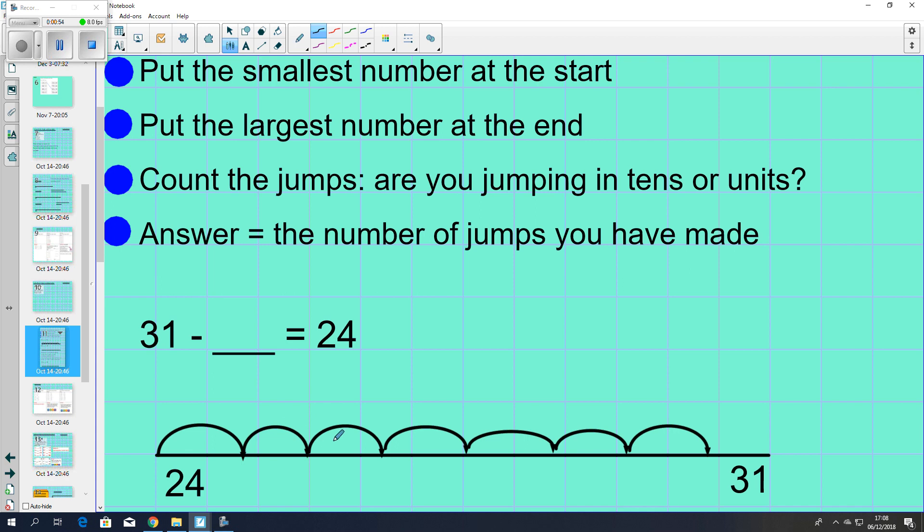So we have 1, 2, 3, 4, 5, 6, 7. And our missing number is 7, and we are going to set it in.